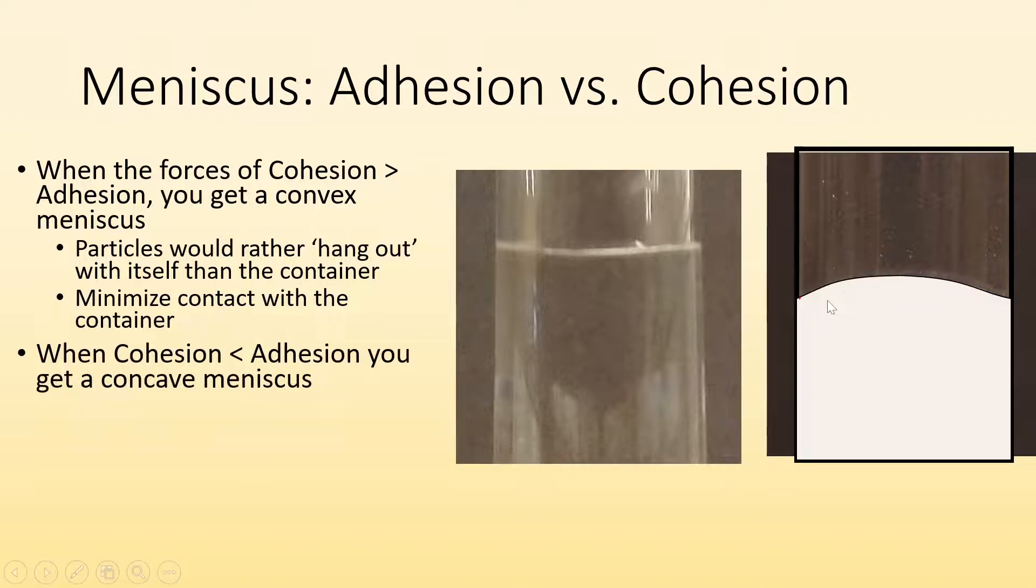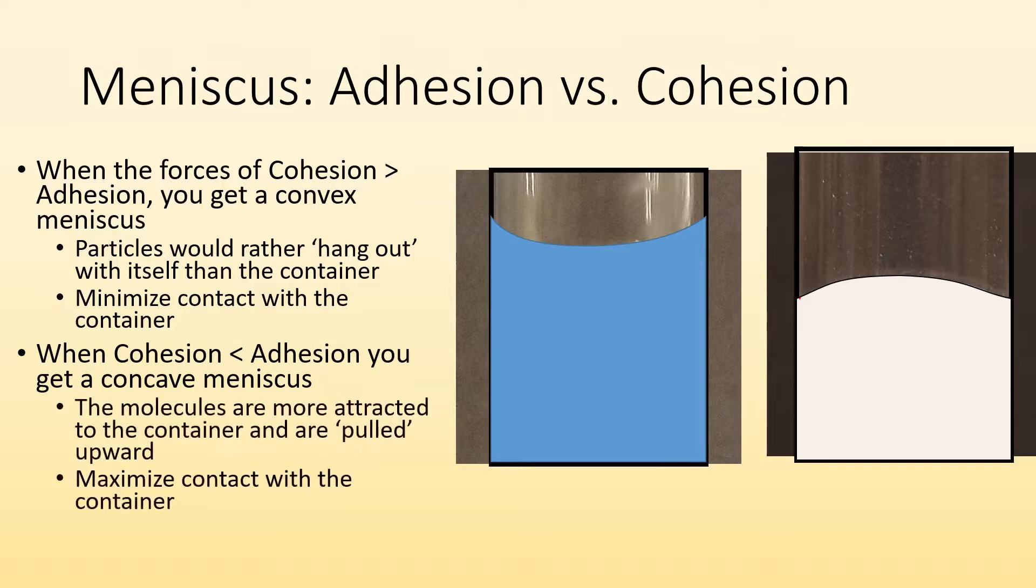Whereas the other way, if the cohesion forces are weaker than the adhesion forces, you get a concave meniscus. Basically, what happens is the water molecules are more attracted to the container and are pulled upward.